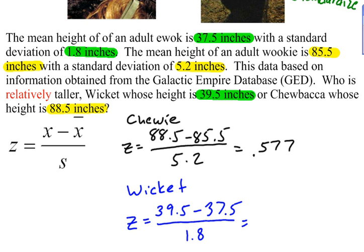And I'll grab my calculator here, and let's go 39.5 minus 37.5, which is 2. Divide that by 1.8, our standard deviation, and we get 1.11 repeating. So, 1.11, since we went three decimal places here, we'll go three decimal places here.